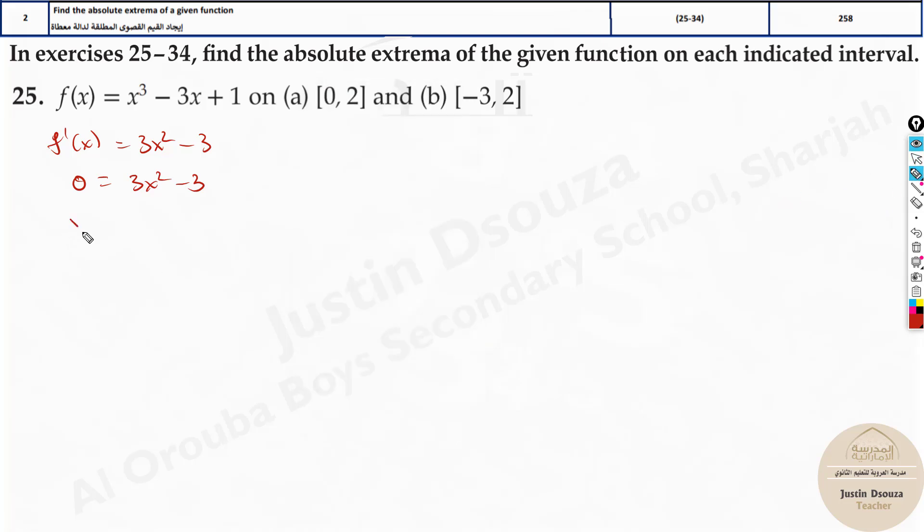The answers are x is 1 and minus 1. So the critical numbers are x equals 1 and x equals minus 1.